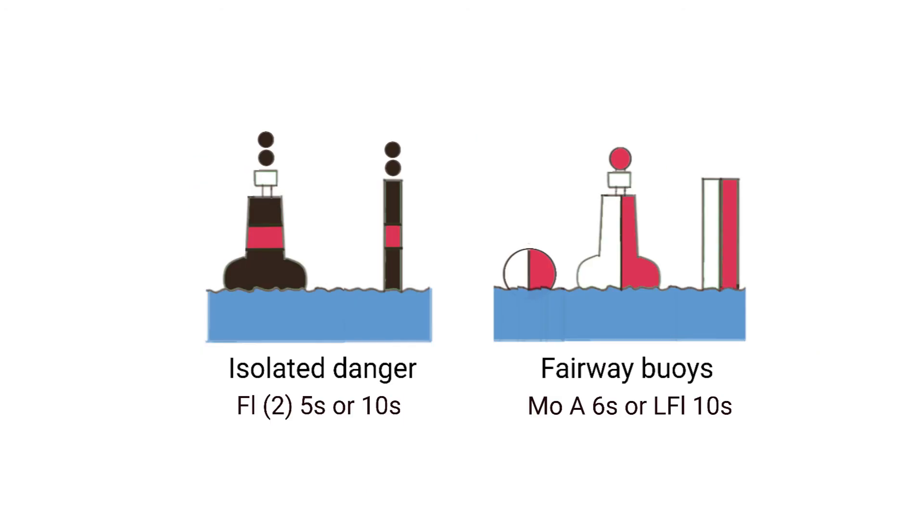Here are some other boys. From left to right, the first is an isolated danger boy. It has two black balls at the top. Its colors are bands of black, red, black. And it may have a flashing white light with groups of two flashes every five or ten seconds. It marks exactly what its name implies, isolated dangers.